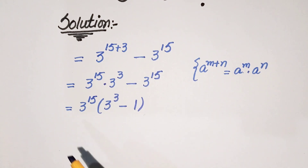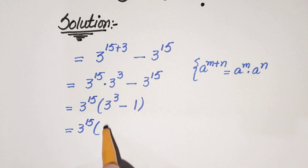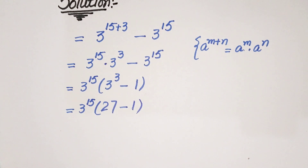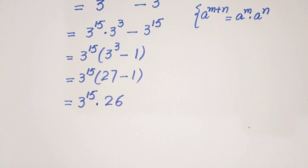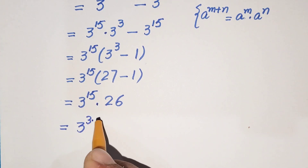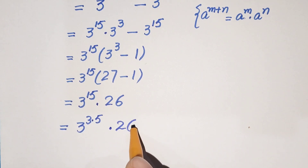Now 3 raised to the power 3 is equal to 27, so we have 27 minus 1 which is 26. So the expression becomes 3 raised to the power 15 times 26. We can also write 3 raised to the power 15 as 3 raised to the power 3 times 5, since 3 times 5 equals 15, times 26.